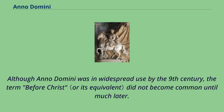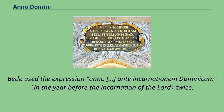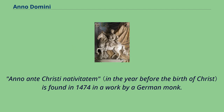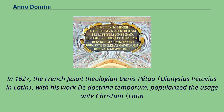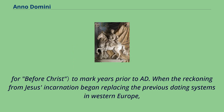Although Anno Domini was in widespread use by the 9th century, the term 'before Christ' did not become common until much later. Bede used the expression 'Anno ante incarnationem Dominicum' twice. 'Anno Antichristi Nativitatem' is found in 1474 in a work by a German monk. In 1627, the French Jesuit theologian Denis Pétau, with his work De Doctrina Temporum, popularized the usage 'Ante Christum' — Latin for 'before Christ' — to mark years prior to AD, when the reckoning from Jesus' incarnation began replacing the previous dating systems in Western Europe.